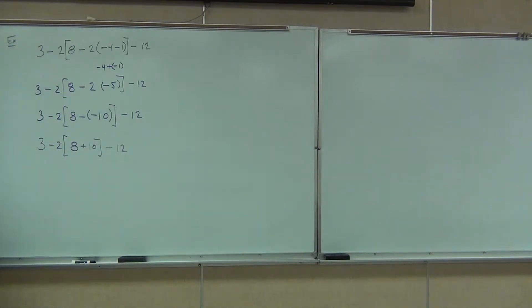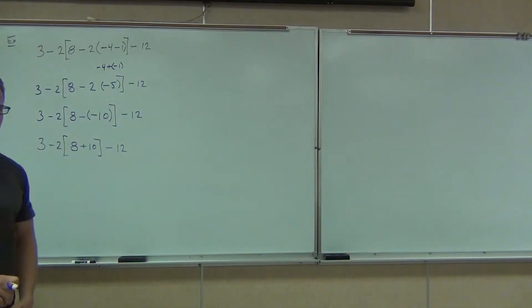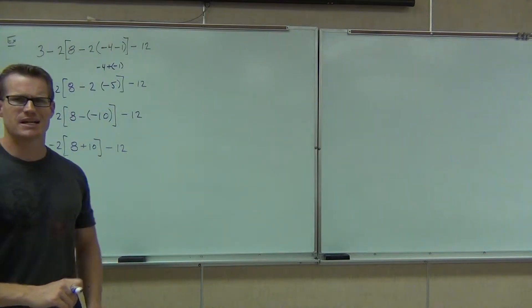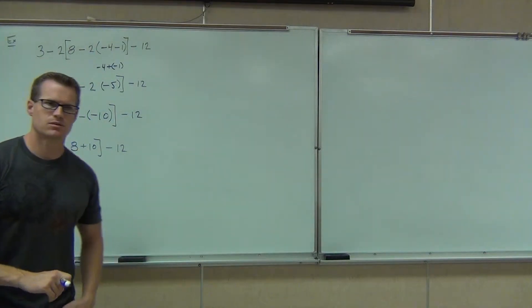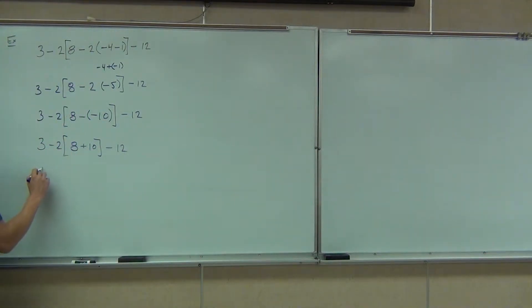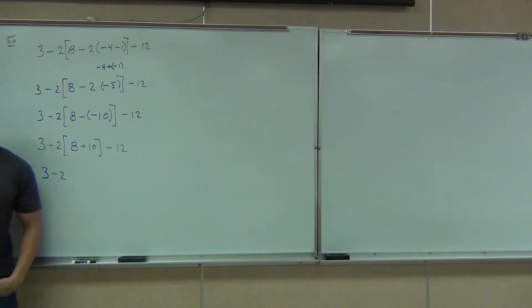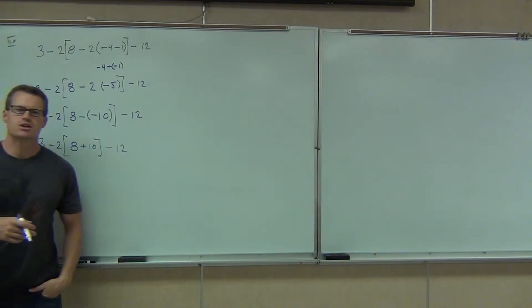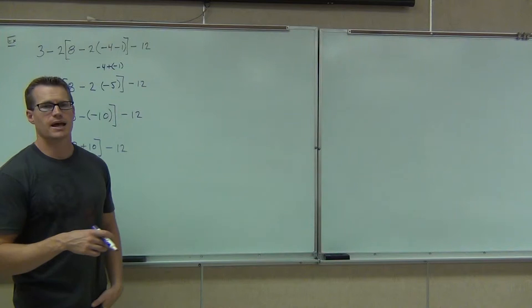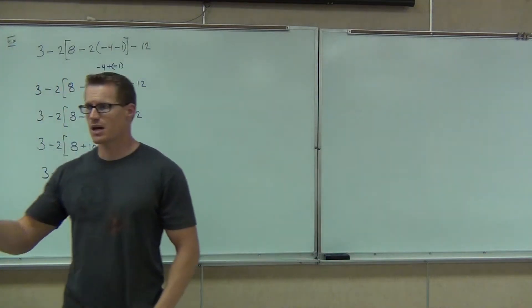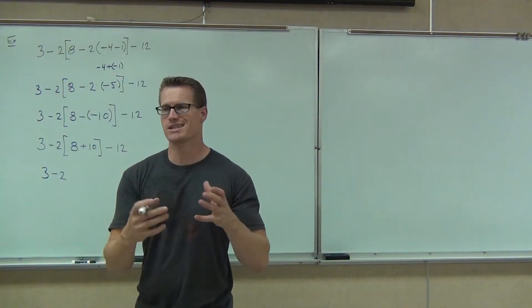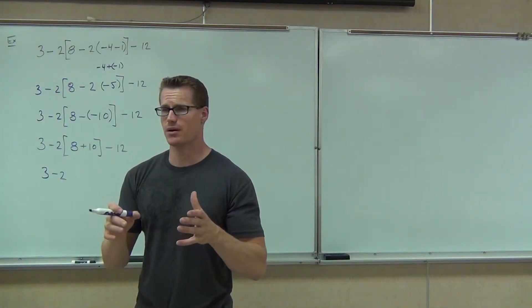So we have 8 plus 10. 8 plus 10 is how much? Not a problem. So we have 3 minus 2. When you do the bracket, you do the 8 plus 10. You've got a couple ways you can write this — you can either write it as times 18 or you keep it in parentheses. It really doesn't matter.